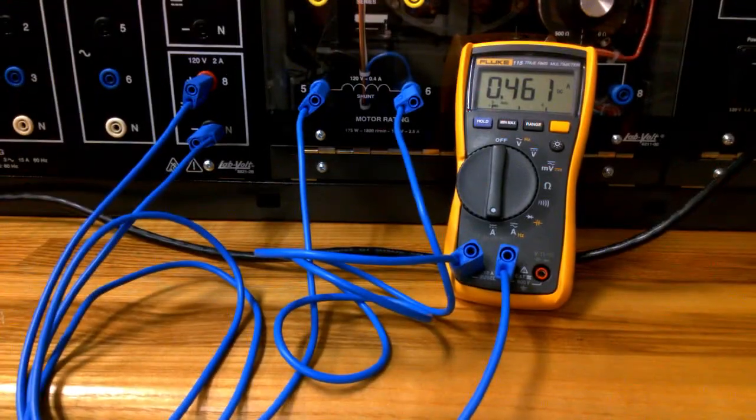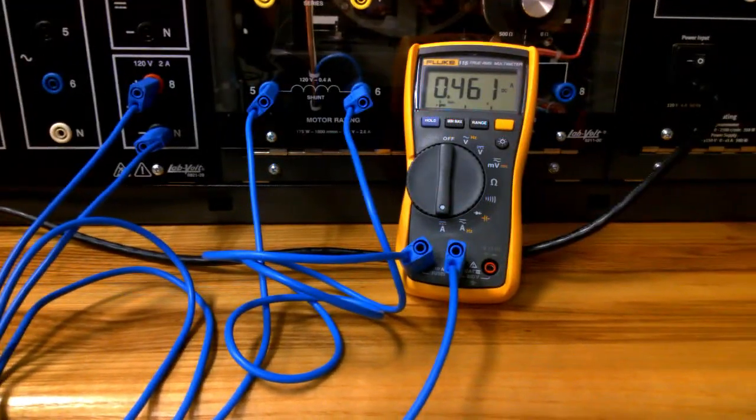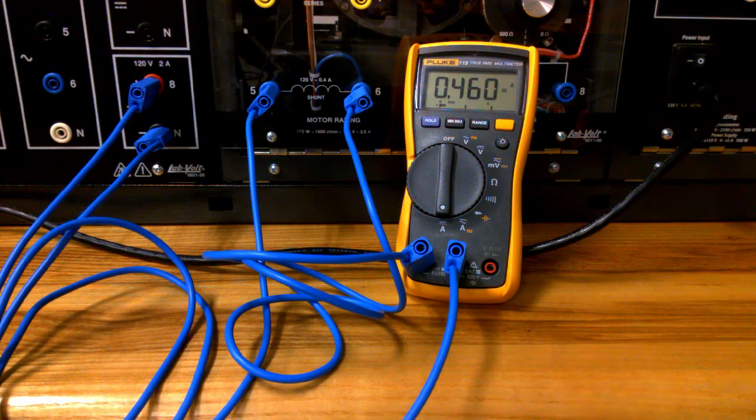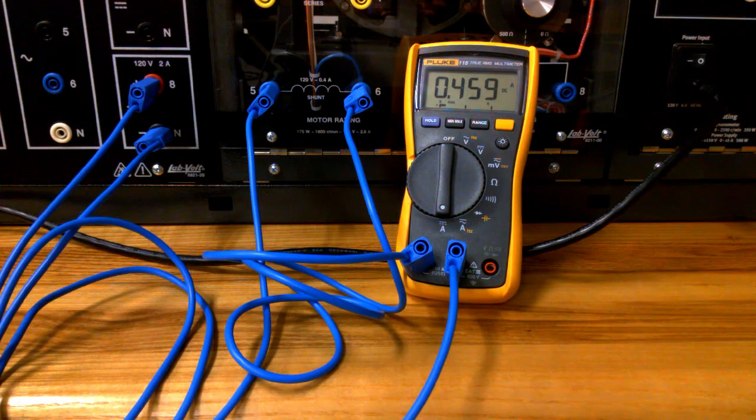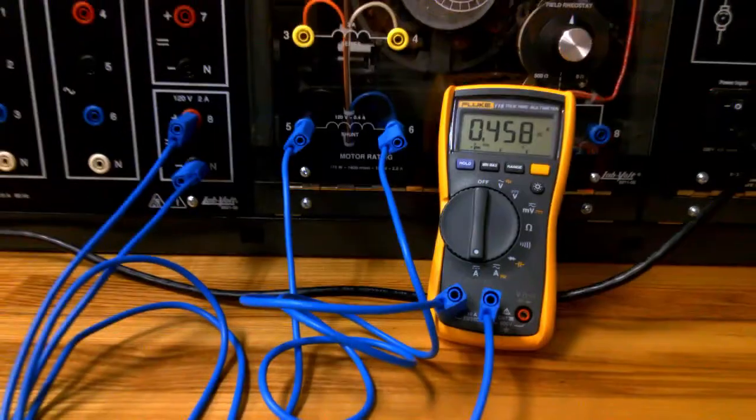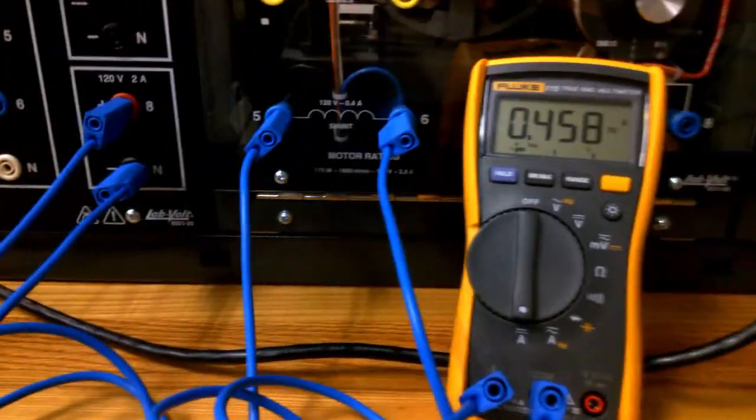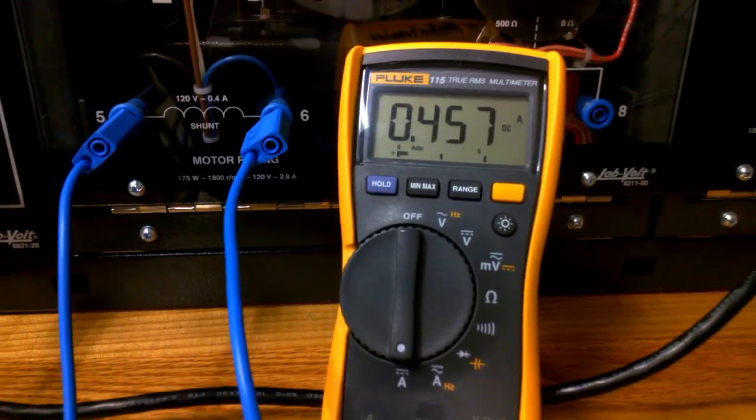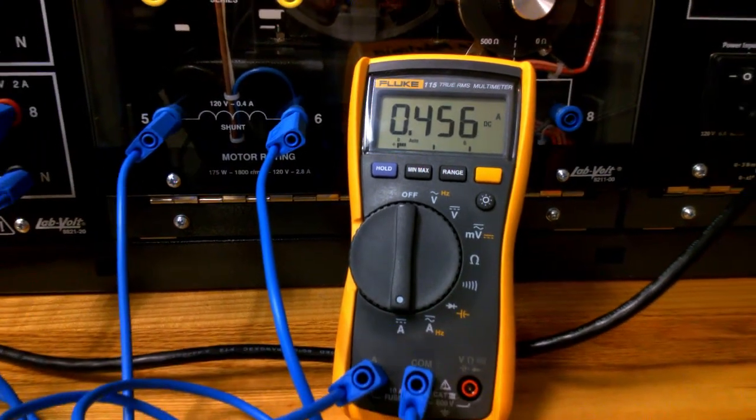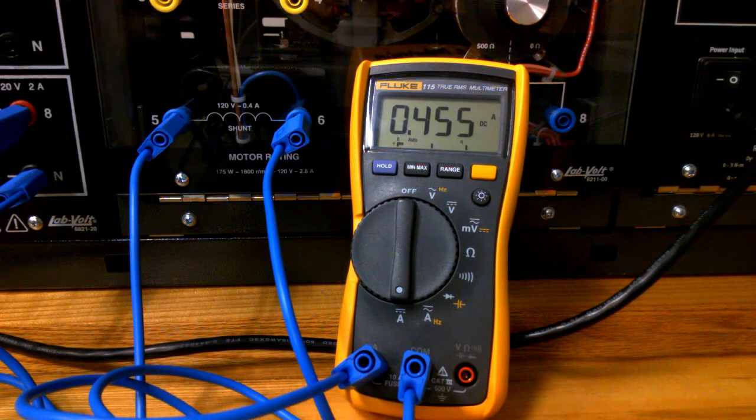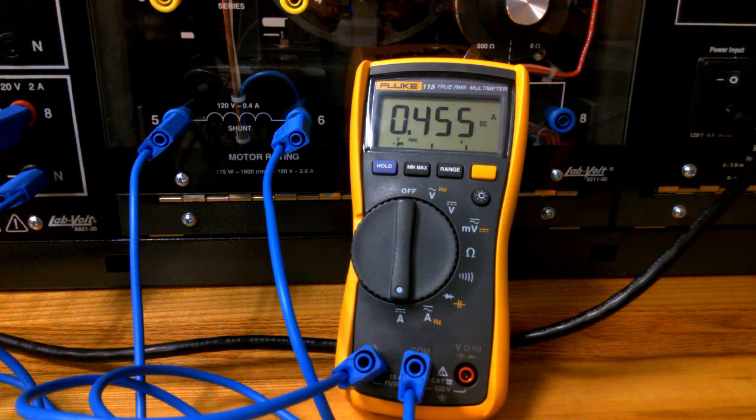So now, now I have the correct connection showing that with 120 volts applied to the shunt field winding, I draw 0.460 amperes. Remember, a current meter generally acts as a dead short circuit to voltage.